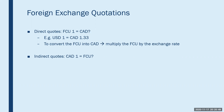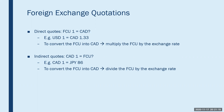In other cases, an indirect quote might be available where one Canadian dollar is expressed in terms of the foreign currency. An example of that could be the Canadian dollar and Japanese yen quotation — suppose one Canadian dollar equals 86 Japanese yen. If we were to convert Japanese yen into Canadian dollars, we would need to divide the yen by the exchange rate. So if we needed to convert one million Japanese yen into equivalent Canadian dollars, we would divide one million by 86 to get the equivalent Canadian dollar amount.